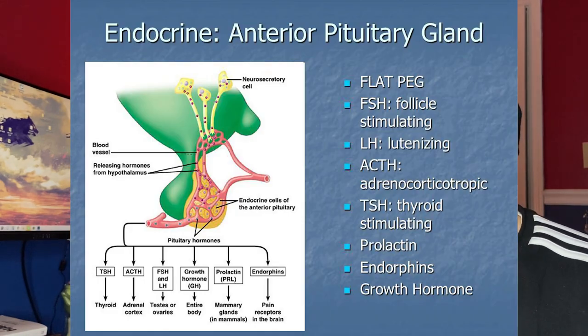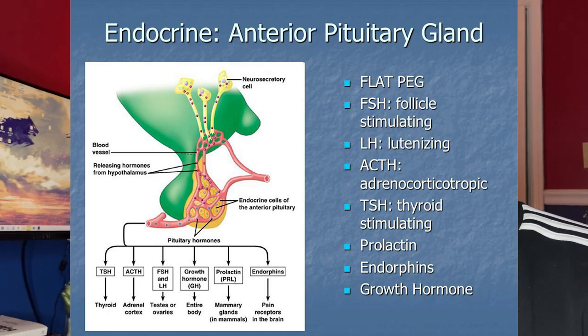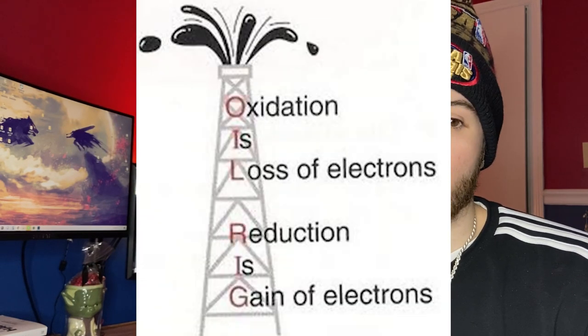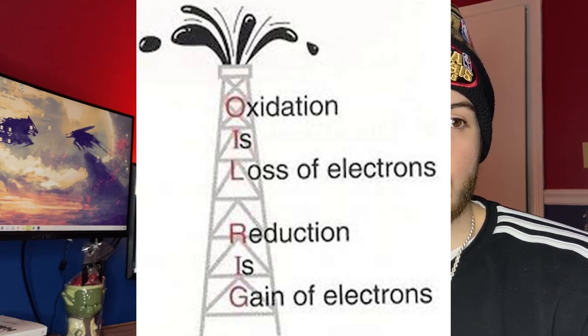Mnemonics really helped me remember stuff. Start with FLAT PEG for the anterior pituitary — that includes FSH, LH, ACTH, TSH, prolactin, endorphins, and growth hormone. For oxidation and reduction: OIL RIG — oxidation is losing an electron, reduction is gaining.